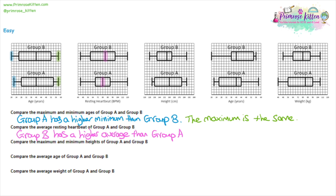Moving on to question three, we are comparing the maximum and minimum values again. Highlight the minimum values and the maximum values. Coincidentally, this is the same answer as the first question — group A has a higher minimum value, but they both have the same maximum values. You can also write this from the point of view of group B: group B has a lower minimum than group A. It doesn't really matter which way around you write it.